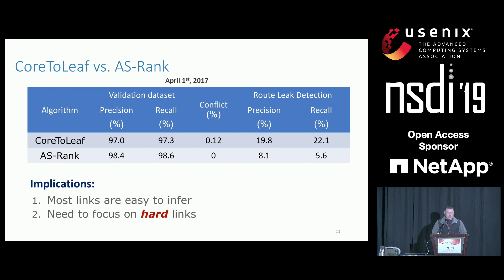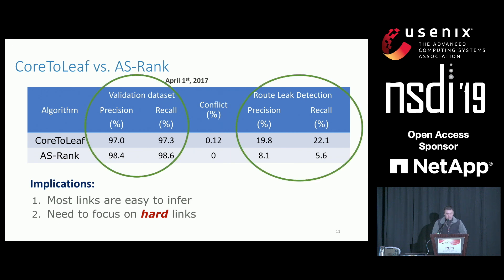We evaluate call-to-leaf and ASRank against the validation dataset. Surprisingly, call-to-leaf achieves high precision and high recall which are comparable to the performance of ASRank, and only a very small fraction of links are labeled as conflict. Notice that there is a small increase in accuracy for ASRank that translates to a significant increase in application-level accuracy. The reasons are that the validation dataset is actually biased and the small errors can lead to significant loss in application-level accuracy.